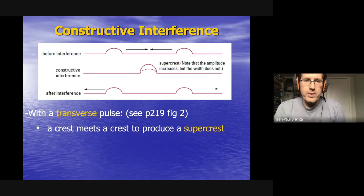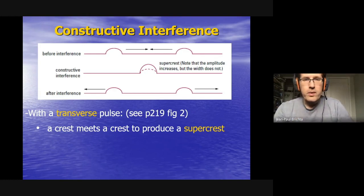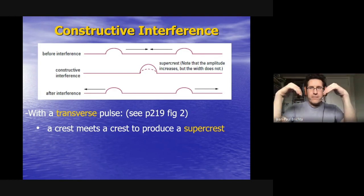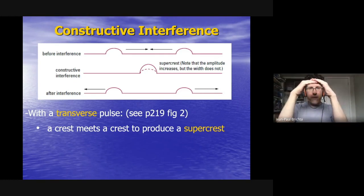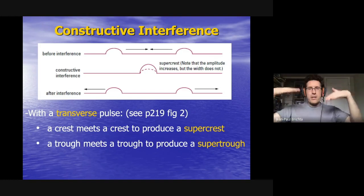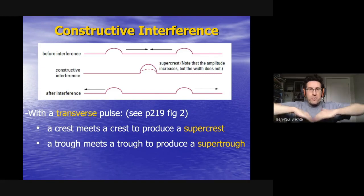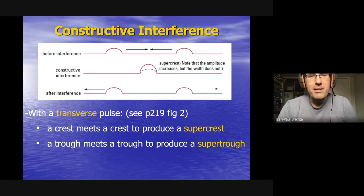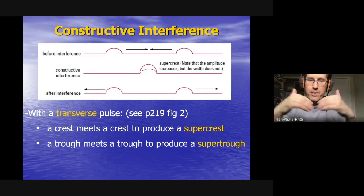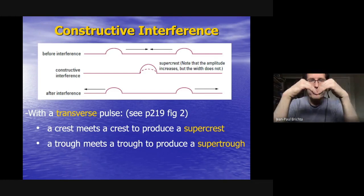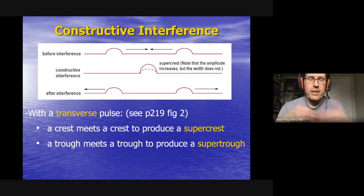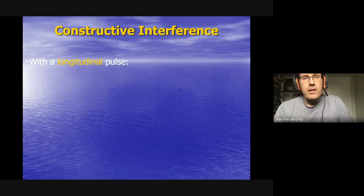This works with both transverse and longitudinal waves. Two crests coming together form a super crest — a really big crest. Likewise, two troughs coming together form a super trough. For longitudinal waves, a compression meeting a compression produces a super compression, and a rarefaction meeting a rarefaction produces a super rarefaction.